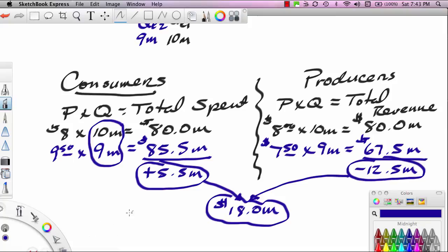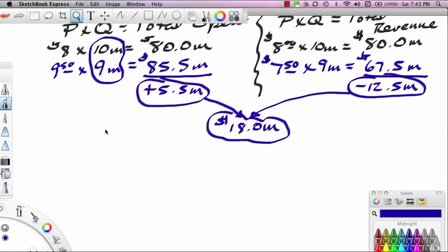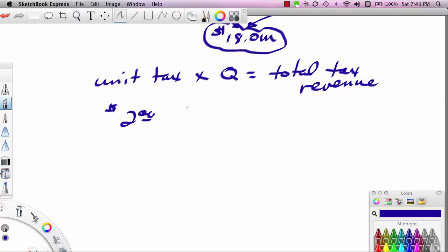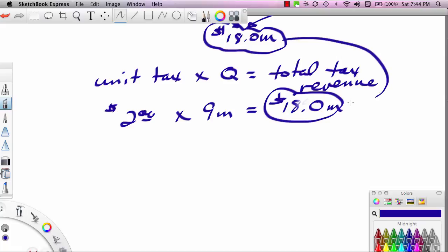If you take what the consumer, the amount by which the consumer pays more, 5.5 million, and the 12.5 million that the producers lose, if you actually combine those amounts and ignore the negative sign, because really think about this as a transfer from producers to government and a payment from consumers to government, you add those together, what do you get? You get 18 million dollars. Now we can go at it directly. If you take the unit tax and you multiply it by the quantity, you get the total tax revenue. The unit tax is $2 a pack times 9 million packs, and that equals 18 million dollars.